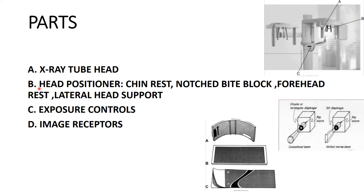The parts of the OPG machine include: the x-ray tube head, head positioner, exposure control, and image receptor. The x-ray tube head is similar to the intraoral x-ray tube head — it has a filament to produce electrons and a target to produce x-rays. A key difference is that the collimator is a lead plate with a narrow vertical slit, which helps minimize the patient's radiation exposure. The x-ray tube head rotates behind the patient's head as the film rotates in front.